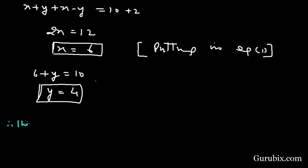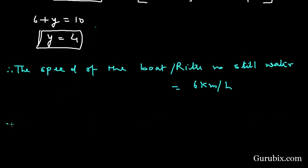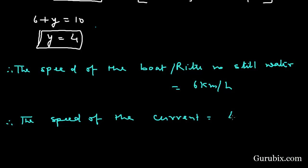Therefore, the speed of the boat — Ritu in still water — equals 6 kilometres per hour. And the speed of the current equals 4 kilometres per hour. This is the solution of the question. Thank you.